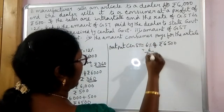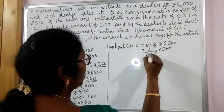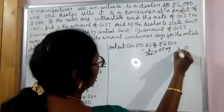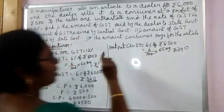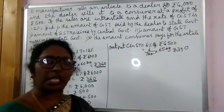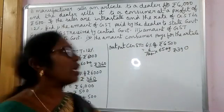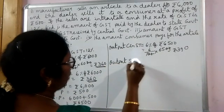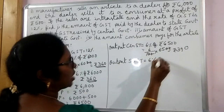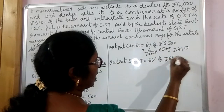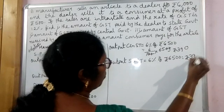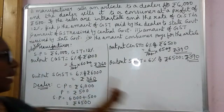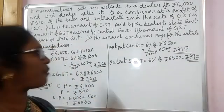6 percent of 6500 is 390 rupees — so the dealer collected 390 rupees from the consumer in the form of CGST. Similarly, the dealer's output SGST is also 6 percent of 6500, which is 390 rupees. The dealer collected 390 rupees in the form of SGST from the consumer.